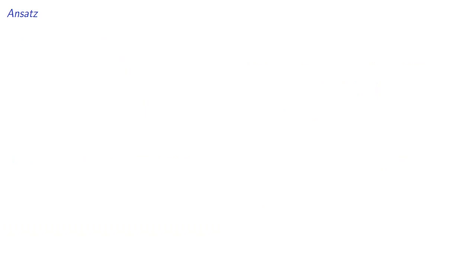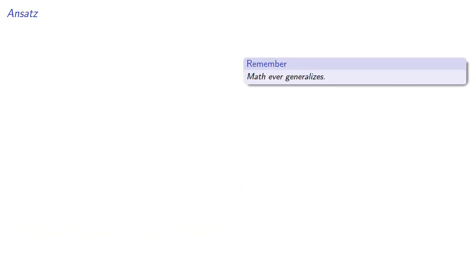So remember, math ever generalizes. What if we had a different matrix? What if our ones weren't consecutive? For example, suppose we had a matrix that looked like this.